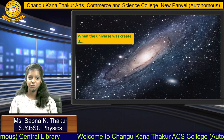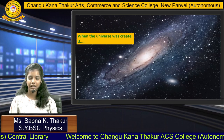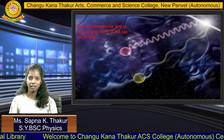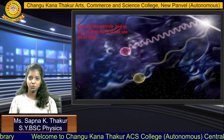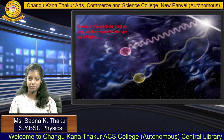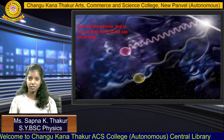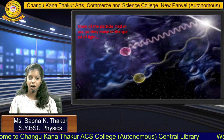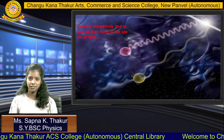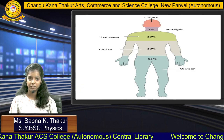When the universe was created, none of the particles had mass, so they moved at the speed of light. But the question is: how did the particles get mass? Let us understand it.